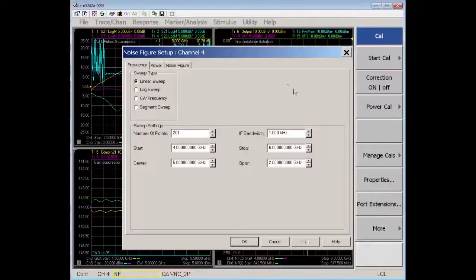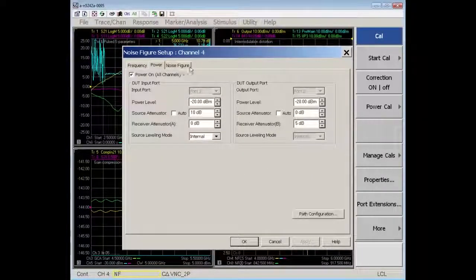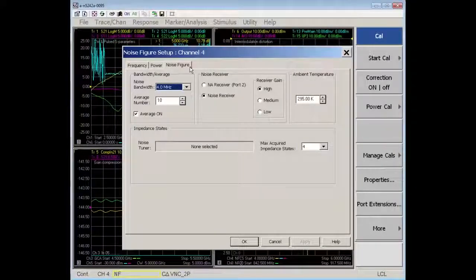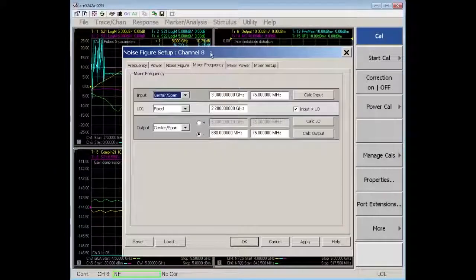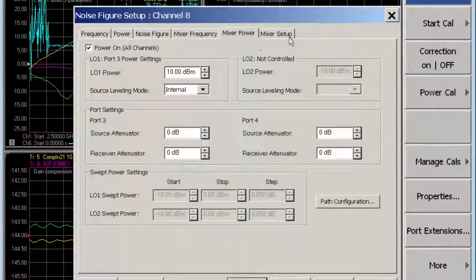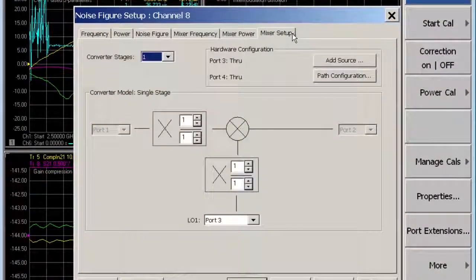Setting up noise figure measurements on the PNA-X is easy using a tab dialog box where all of the necessary setup information is entered. When measuring converters, three additional tabs are used to define the mixing plan and local oscillator setup.